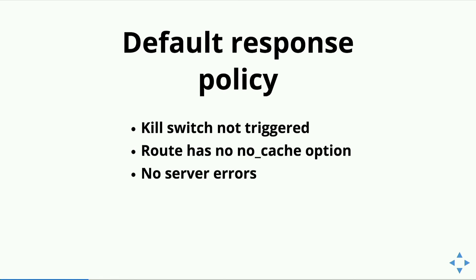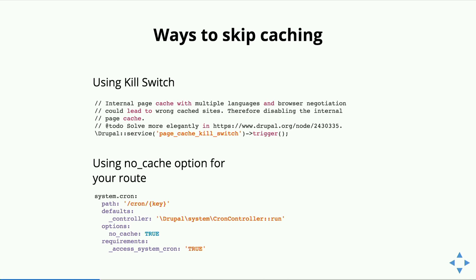Response policies are where the tricky part comes in. There are three ways to manipulate a page so it doesn't go into anonymous page cache. First, a page kill switch service — you trigger it and the next page request won't be cached. Second, a route option: if you specify 'no_cache' on your route, the route won't be cached. Third, a no-server-errors policy — if there's at least one server error, the page won't be cached.